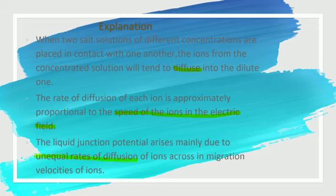If the speeds of ions are different, the rate of diffusion will be different, and migration velocities will be different. This is why we have an overall liquid junction potential. The reason is the unequal rates of diffusion of ions across the junction and the migration of ions.